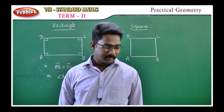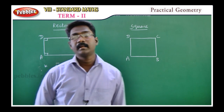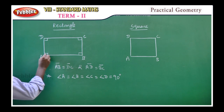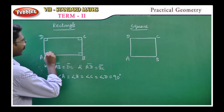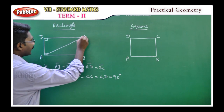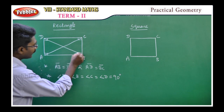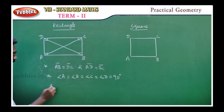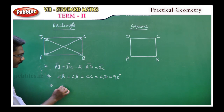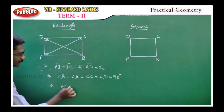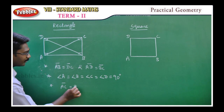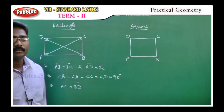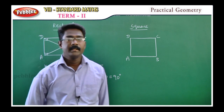Third property: in a rectangle, each angle is a right angle — that is, each angle is 90 degrees. Fourth property: in a rectangle, the diagonals are equal in length. So diagonal AC is equal to diagonal BD — the diagonals are equal in length.